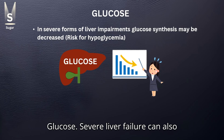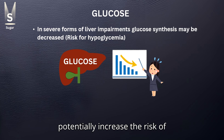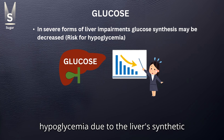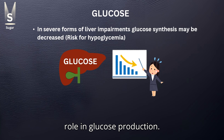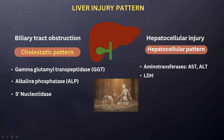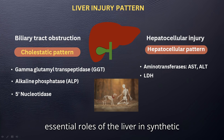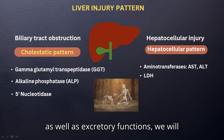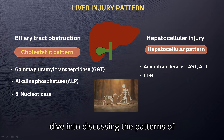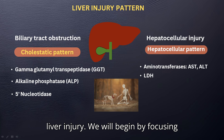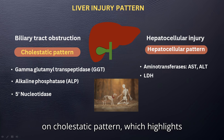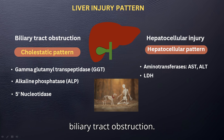Glucose. Severe liver failure can also potentially increase the risk of hypoglycemia due to the liver's synthetic role in glucose production. Now that we have outlined the essential roles of the liver in synthetic as well as excretory functions, we will dive into discussing the patterns of liver injury. We will begin by focusing on the cholestatic pattern, which highlights biliary tract obstruction.